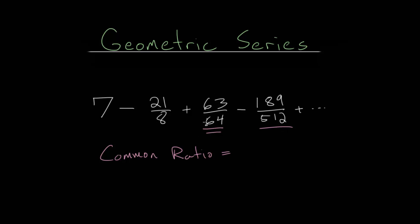Since, remember, to go from one term to the next, we call this r, we are just multiplying by that common ratio. So, we can choose any terms we want, and it's usually going to be easier if you choose smaller numbers. So, let's just choose 63 over 64 and divide it by this 21 over 8 here.